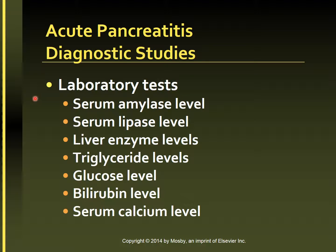The primary diagnostic tests for acute pancreatitis are serum amylase and lipase measurements. The serum amylase level is usually elevated early and remains elevated for 24 to 72 hours. Serum lipase level is also elevated and is an important test because other disorders like mumps, cerebral trauma, and renal transplantation may increase serum amylase levels. Other findings include an increase in liver enzymes, triglycerides, glucose, and bilirubin levels, and a decrease in calcium level.